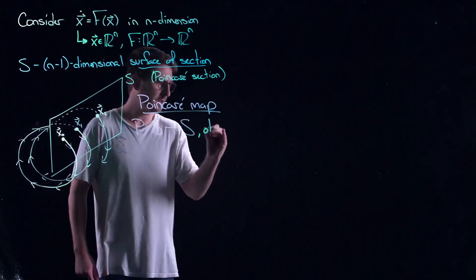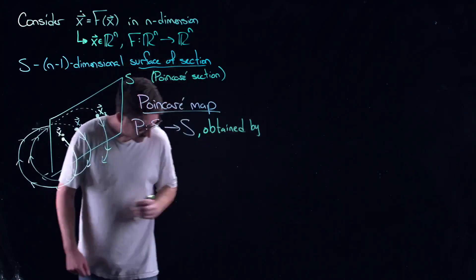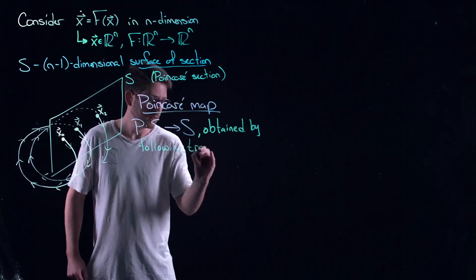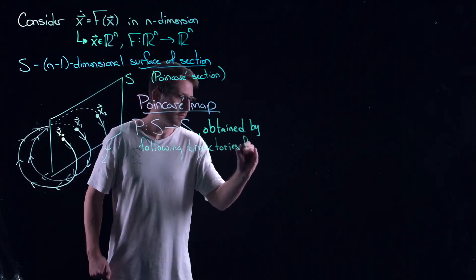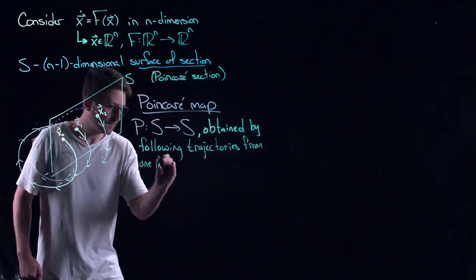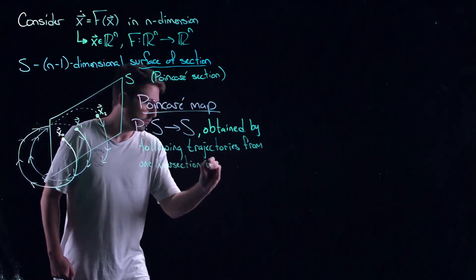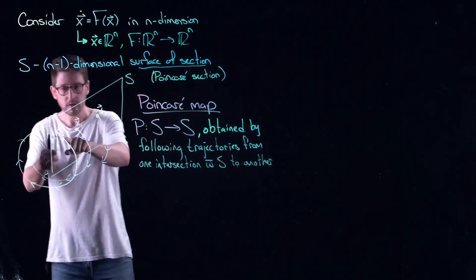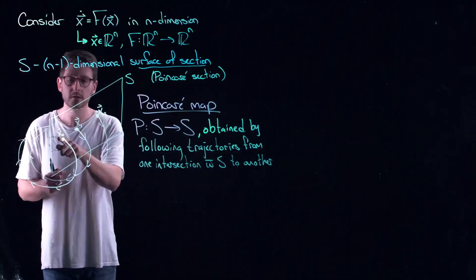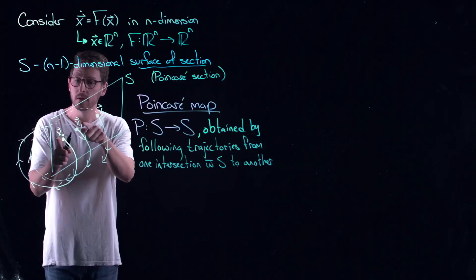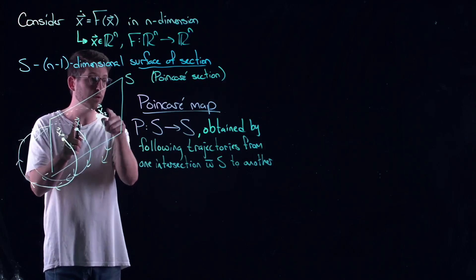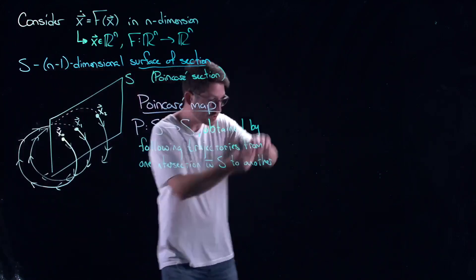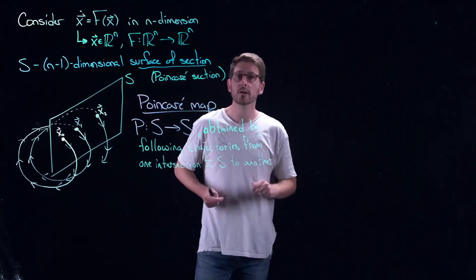The Poincaré map is obtained by following trajectories from one intersection with S to another. If I started at x0, the Poincaré map gives me x1. If I put x1 into the Poincaré map, I get x2. The Poincaré map doesn't care how long you take to get back — it loses all of that information. It just wants to know where you came back to in the section.